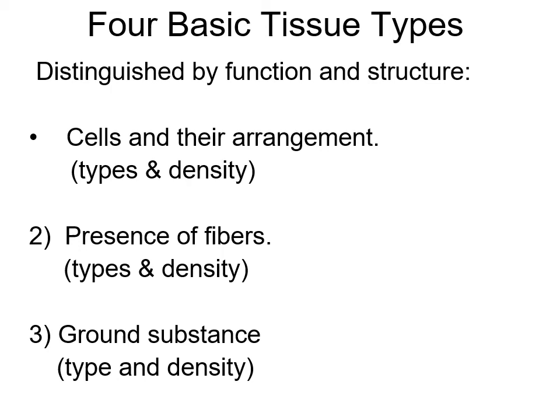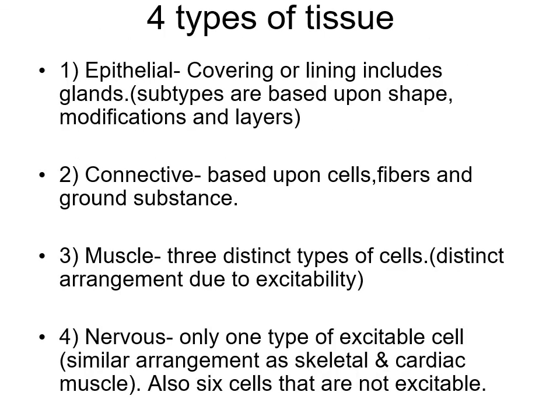The second thing you may see on some tissues, especially connective tissue, is fibers. We look at the types and density of fibers in that tissue. The stuff in between is sometimes called the ground substance - look at the type and density of that. When looking at connective tissue, you combine the fibers and ground substance - that becomes your matrix.